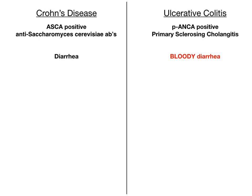Crohn's disease presents with diarrhea, and ulcerative colitis also presents with diarrhea, but it's much more likely to be bloody in ulcerative colitis. The reason is the formation of ulcers, which tend to bleed very heavily. So if you understand the ulceration formation in UC, bloody diarrhea makes more sense. If you're on an exam and all you see is bloody diarrhea and you have to guess between Crohn's and ulcerative colitis, you should guess ulcerative colitis.